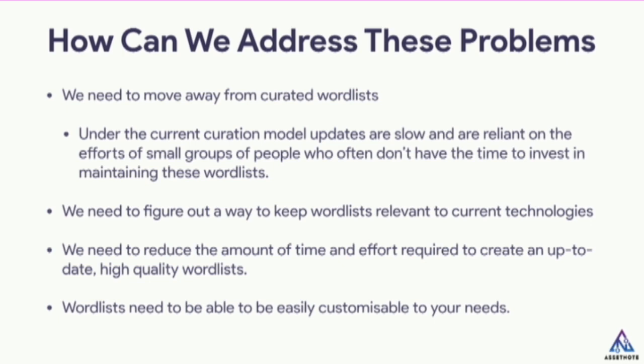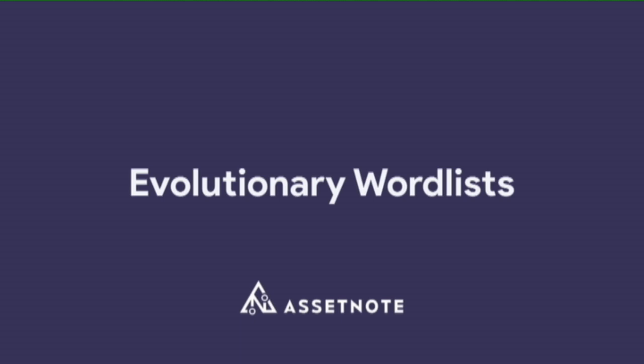So, how can we address these problems? I think we need to move away from curated word lists. Under the current model, updates are slow because people have stuff to do — nobody gets paid to create word lists typically. We need to figure out a way to keep word lists relevant to current technologies, and reduce the amount of time and effort required to create an up-to-date, high-quality word list.